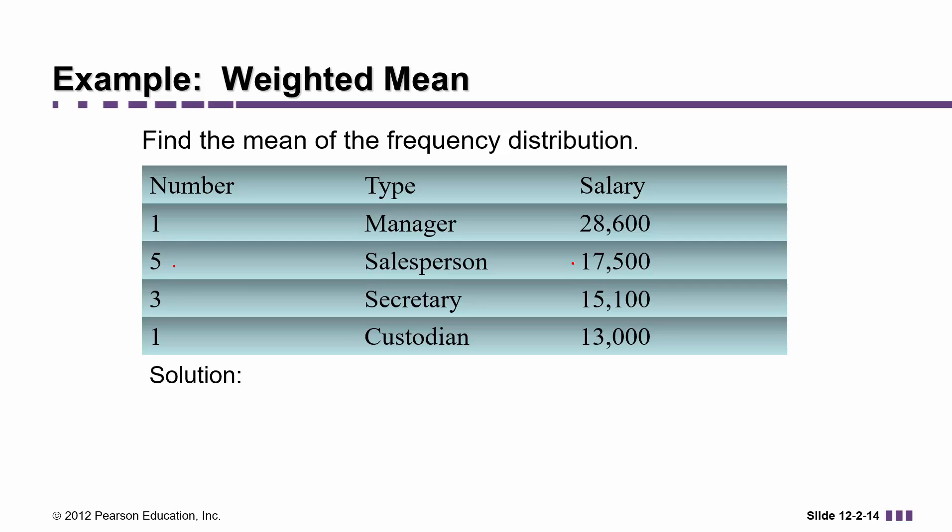Hi, my name is Ms. Hearn. Let's get started. We're going to talk about how to calculate the mean of a frequency distribution, or in other words, a weighted mean, both by using a table and working it out by hand, and by using a calculator. The calculator we're going to use is the Texas Instruments 30X2S. The scenario that we're going to look at is how to calculate the average salary for a particular company.